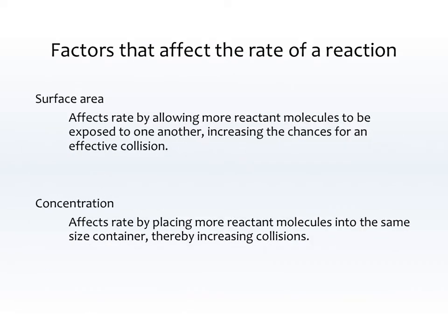Some factors that affect the rate of a reaction are surface area. Surface area affects the rate by allowing more reactant molecules to be exposed to one another, increasing the chances for an effective collision. For example, if I have a cup of water and put a sugar cube in the bottom, when the water hits the sugar cube it'll dissolve on the outside, but it won't be able to dissolve right in the center because the center won't be able to touch the water. So not all of the surface of the sugar is touching the water at one time.